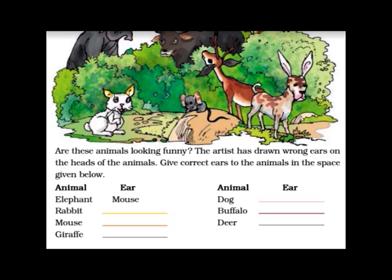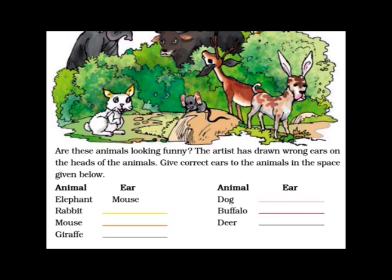Rabbit has ears of giraffe. Mouse has ears of a dog. And giraffe has ears of elephant. Dog has these long ears — whose ears are long? Rabbit. Rabbit has long ears. Buffalo has ears of deer. And deer has ears of buffalo. These are the ears of buffalo.